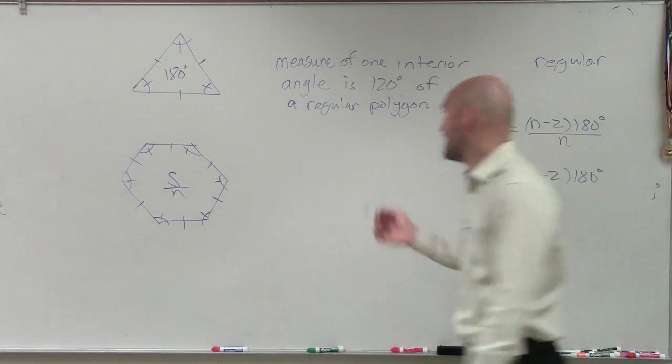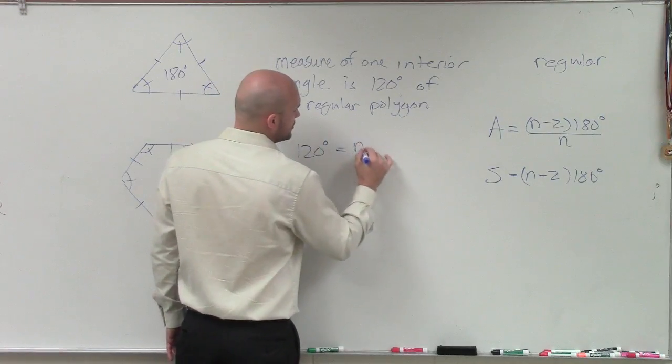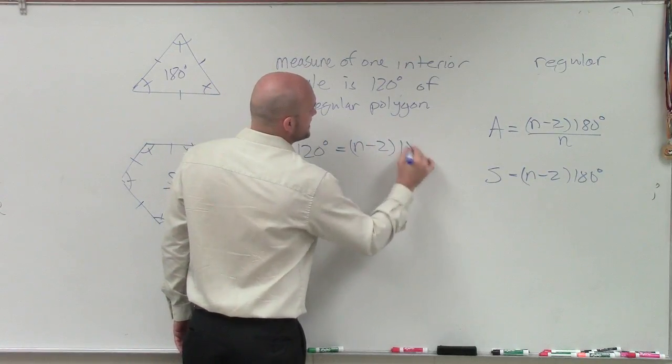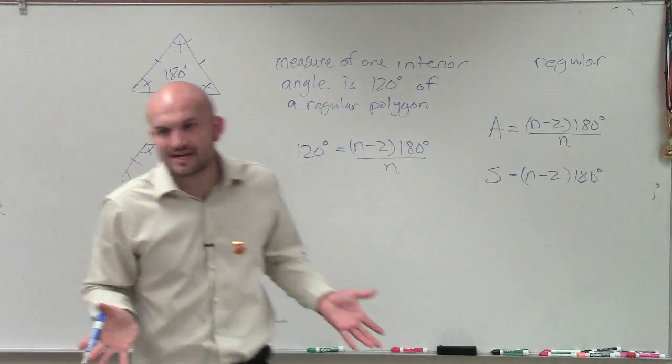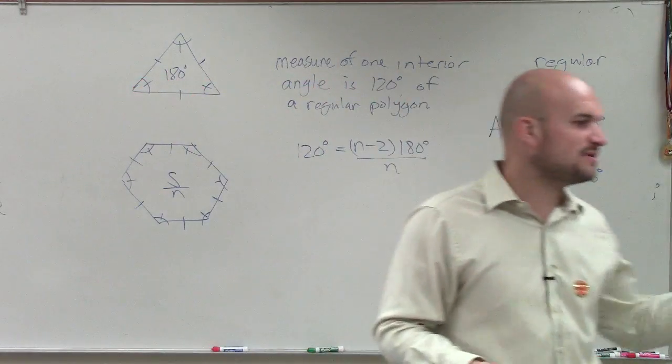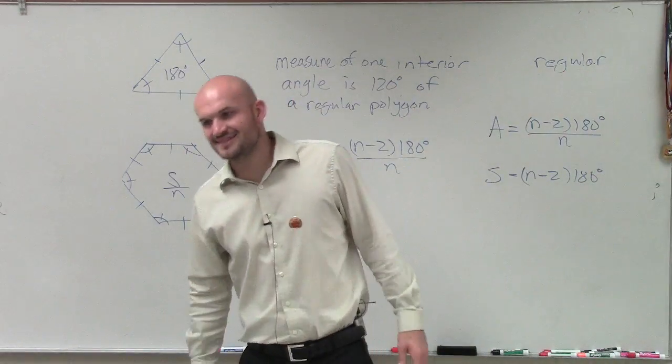But they're asking us to find n. So what I'm going to do is I'm going to say 120 degrees equals n minus 2 times 180 divided by n. So in question number seven, guys, you do the exact same formula, except it would be 156. All right, but now, Dustin, this is where it gets tricky.